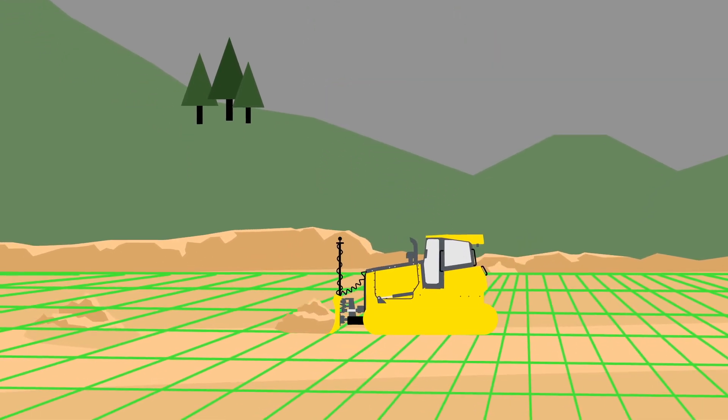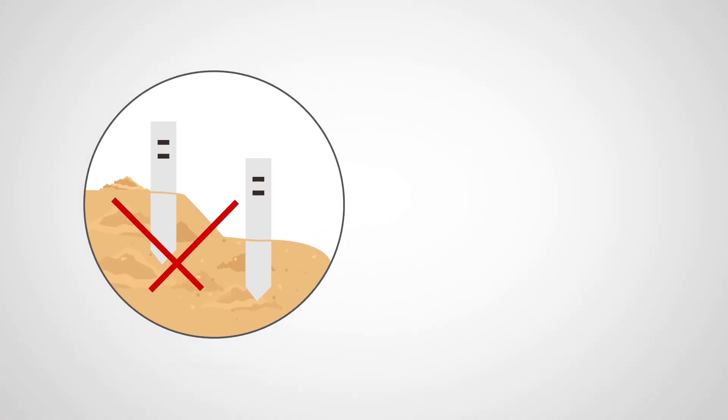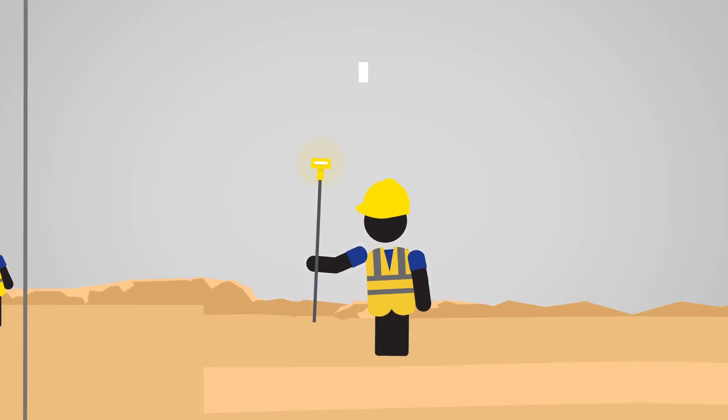Grade control systems improve the contractor's accuracy, reducing the number of passes for faster job completion, while eliminating the need for grade stakes and additional crew members on the job site, even during the verification process.